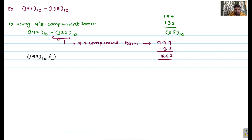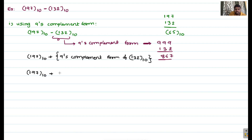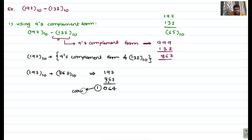Adding 197 and 867: 7 plus 7 is 14, write 4 carry 1. 9 plus 6 is 15, plus carry 1 is 16, write 6 carry 1. 8 plus 1 is 9, plus carry 1 is 10, write 0 carry 1. So the result has a carry of 1. In r-minus-1's complement form, you add this end-around carry back to the true magnitude. 4 plus 1 equals 5, giving a final result of 65.